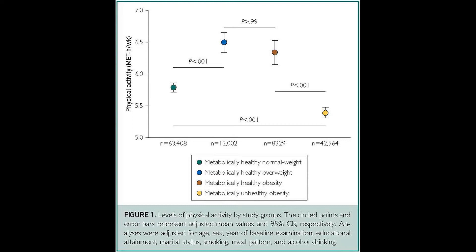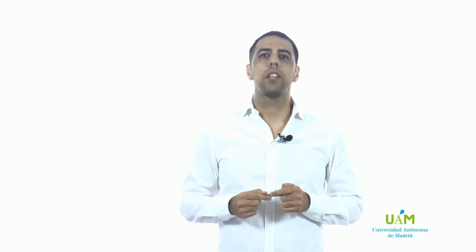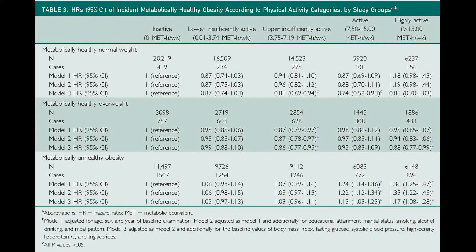Among participants with metabolically unhealthy obesity, only 30% moved to the metabolically healthy obesity phenotype. When examining the association between physical activity and incident metabolically unhealthy obesity, we found that among both metabolically healthy normal weight and metabolically healthy overweight participants, high physical activity was associated with a lower risk for developing this unhealthy condition. However, among metabolically healthy obese participants, physical activity was not associated with the incidence of metabolically unhealthy obesity. When examining the association between physical activity and incident metabolically healthy obesity, we found that only among metabolically healthy overweight participants, high physical activity was associated with a lower risk for developing this healthy but obese condition.